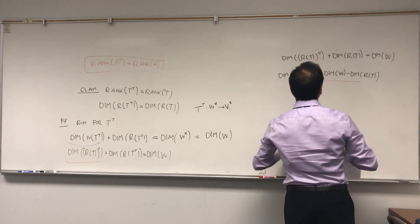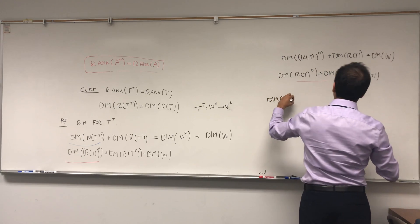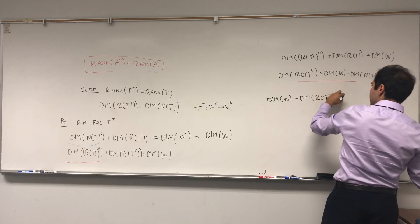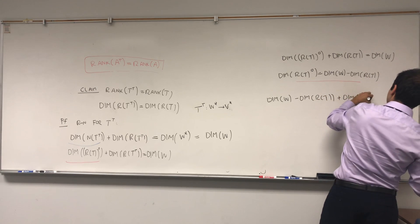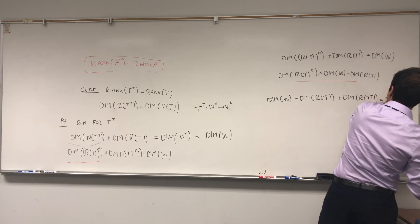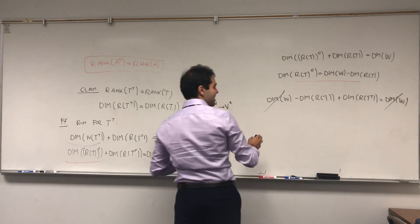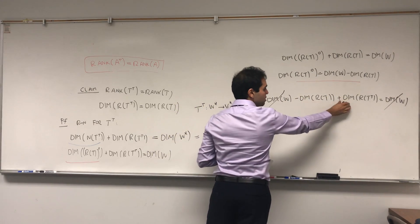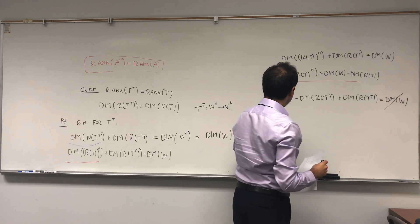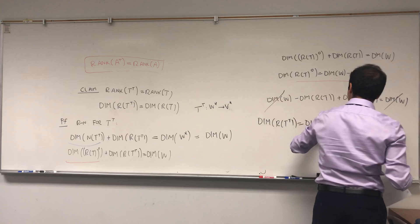So, and now we can simply take this identity and put it back here. And we're almost done, so we get dimension of W minus dimension of the range plus dimension of the range of T transpose equals to the dimension of W. W, we just forget about it. And we get minus this plus this is zero. So, the dimension of range of T transpose equals to the dimension of the range of T.